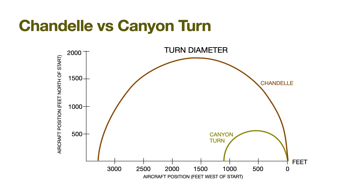Many practical exam candidates will say that a Chandelle is the antidote to that situation, and that's just not true at all. Here is a simulation comparing the turn diameter for a Chandelle in my airplane — almost 3,500 feet — versus the diameter for the traditional canyon turn in which flaps were extended and the airspeed slowed as much as possible while maintaining control for the course reversal. In this case, the turn diameter was closer to 1,100 feet, about a third as much as the Chandelle.